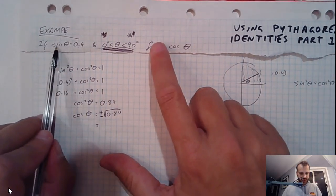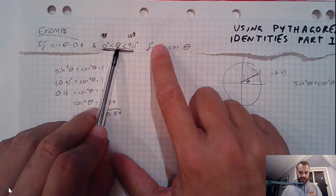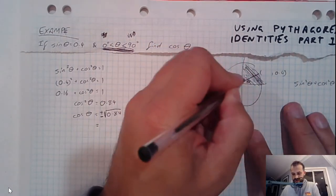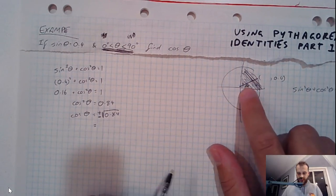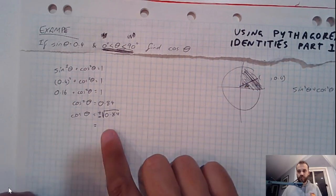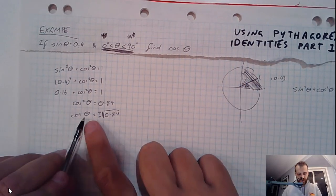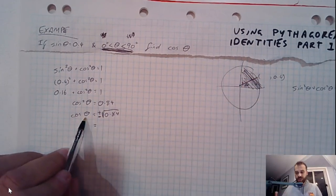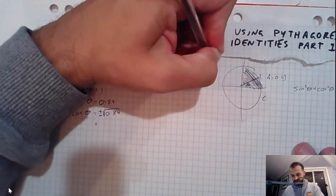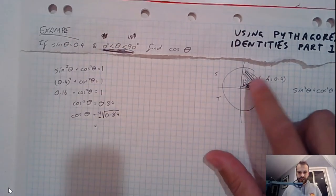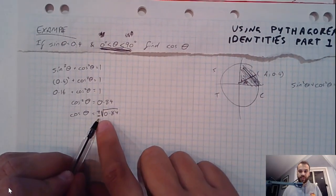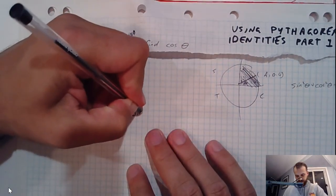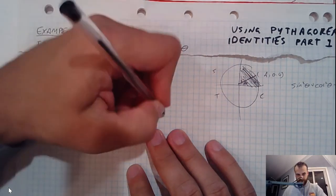We know that sin theta is equal to 0.4, and theta is between 0 and 90. We know that our answer is definitely going to be in quadrant 1, and if our answer is definitely in quadrant 1, cos of any angle in quadrant 1 is going to be positive, C-A-S-T. So this negative answer doesn't make sense, so we can just write a little note here that says disregard negative.